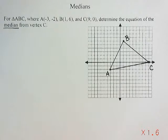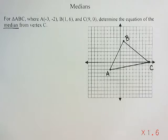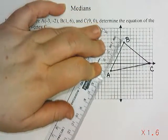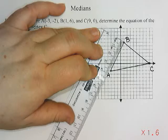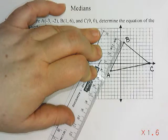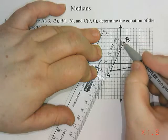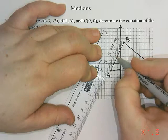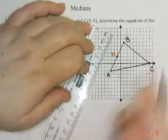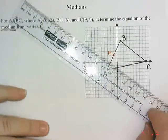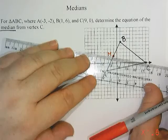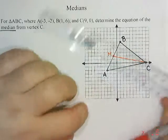So a median cuts a triangle in half so that you would have an equal area on either side. It goes from the corner to the midpoint of the opposite side, which is AB. So for drawing purposes, I'm just going to measure AB, see how long it is, and then find where halfway would be. This comes out to be about 3.5 centimeters, so half is 1.75. I'll find 1.75 and mark that with an M for the midpoint. So our median goes from point C to the midpoint of the opposite side.